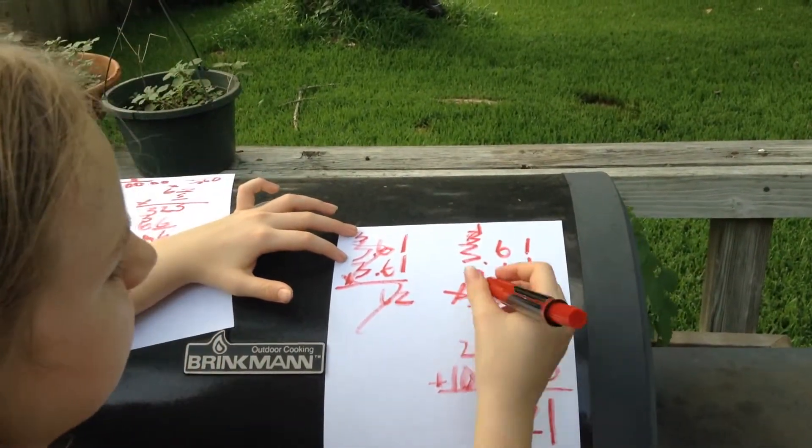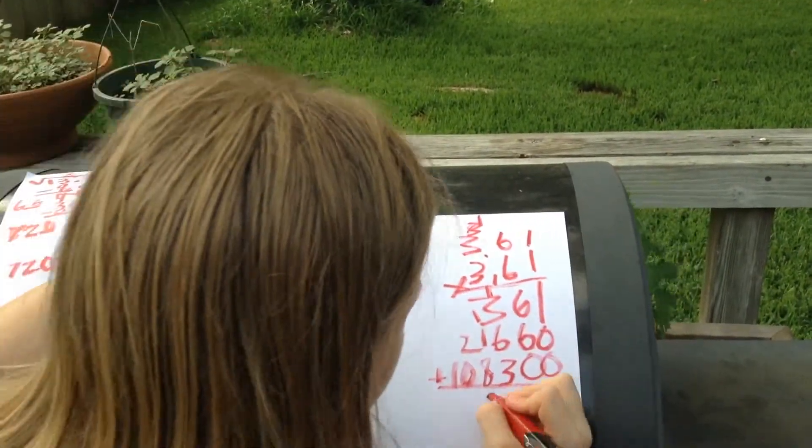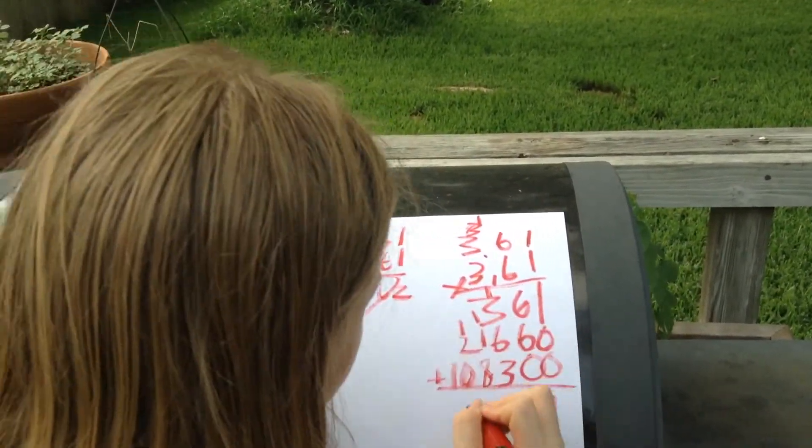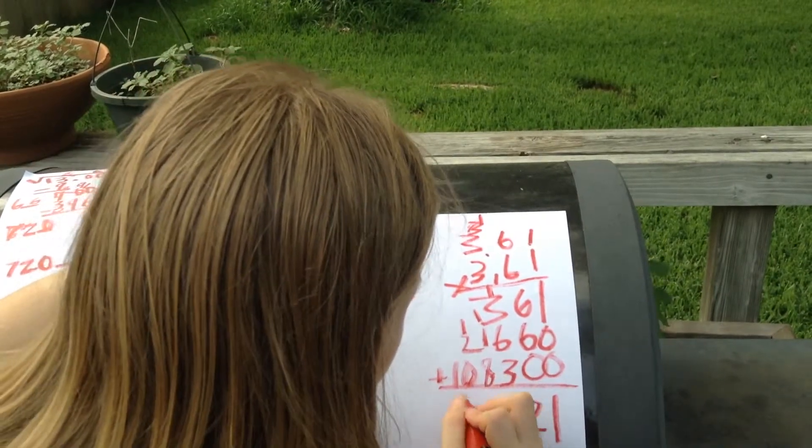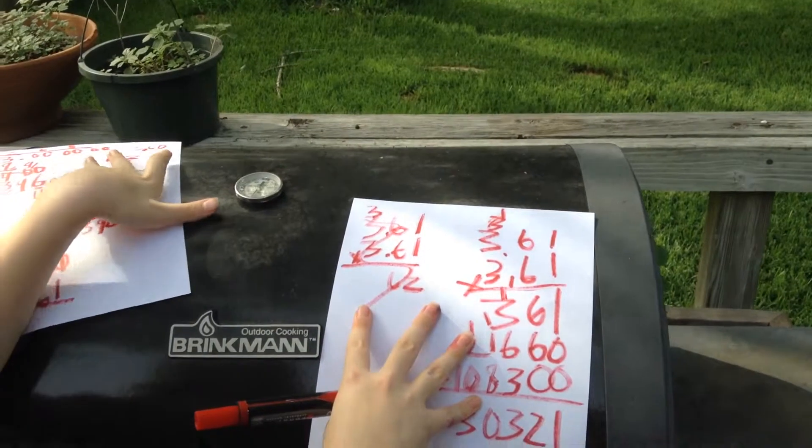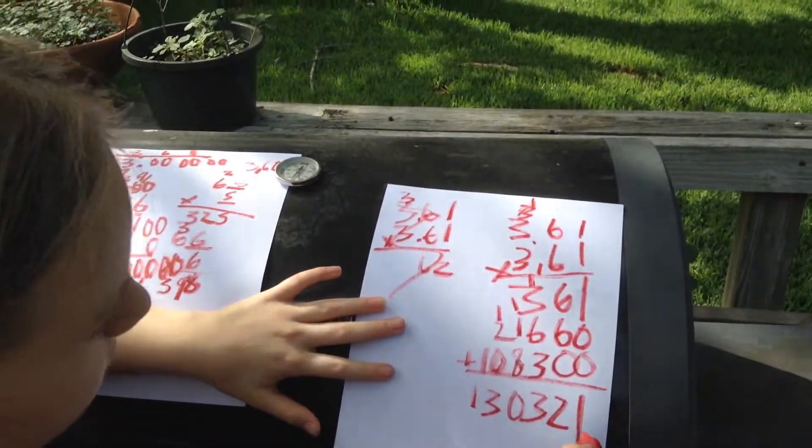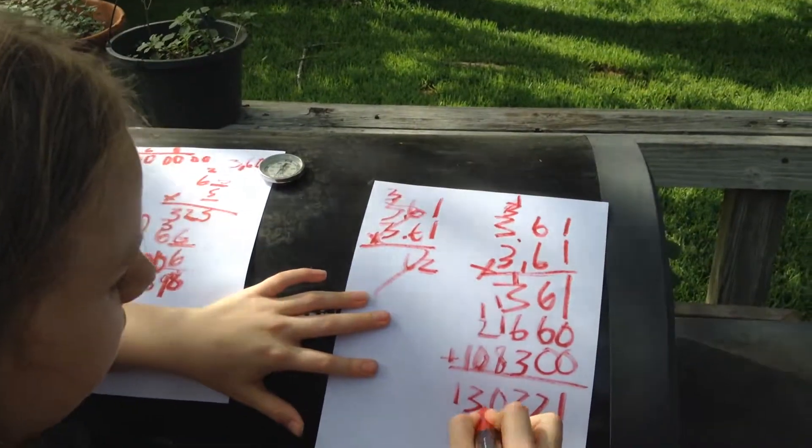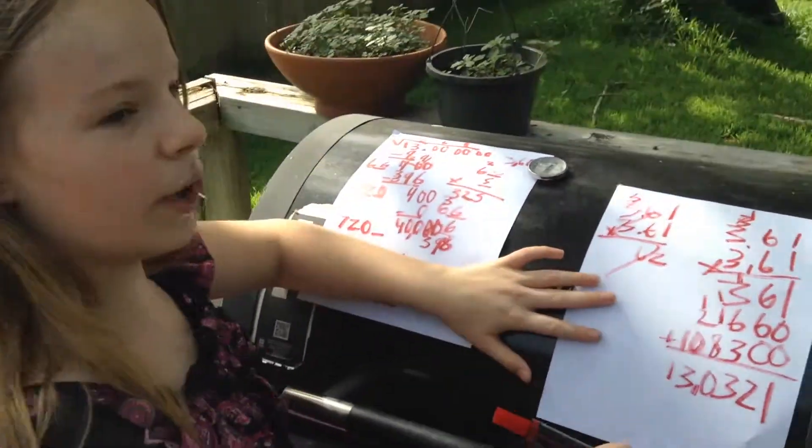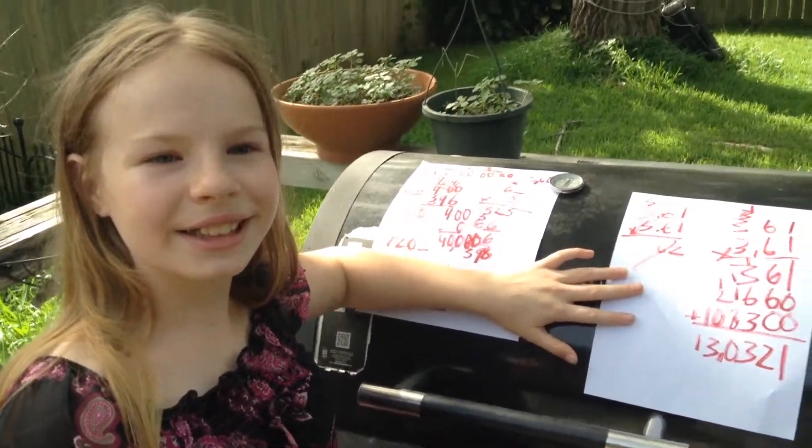And then, my original number was 13. And then I got 13.321 and that's where that's. There you go. That's verification.